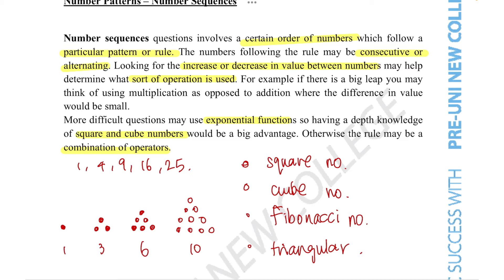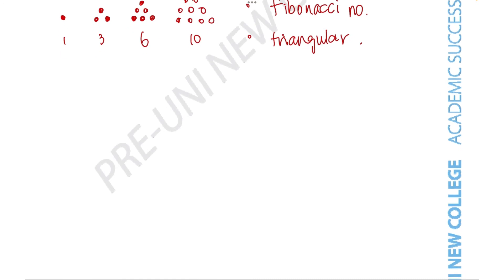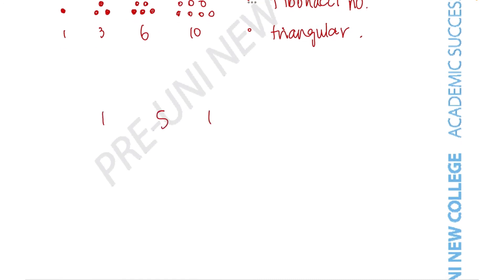If the increase is going up really fast—say from 1, 5, 100, 1000—then you know something with multiplication is going on because you can't just add these gigantic numbers.